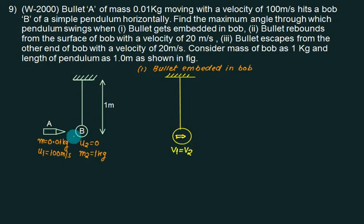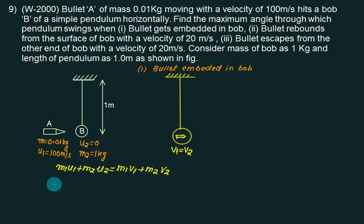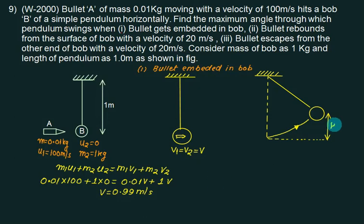In the first case, if the bullet is embedded, v1 is the same as v2 — velocity just before impact and just after impact. We apply the law of conservation of momentum: m1*u1 + m2*u2 = (m1 + m2)*v. We find v equals 0.99 m/s. The height h equals v2² divided by 2g.